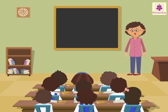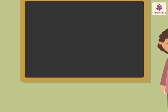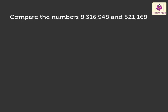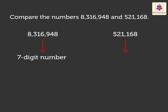Let us look at the first example. Compare the numbers 8,316,948 and 521,168. Look, here the first number is a 7-digit number, whereas the second number is a 6-digit number.